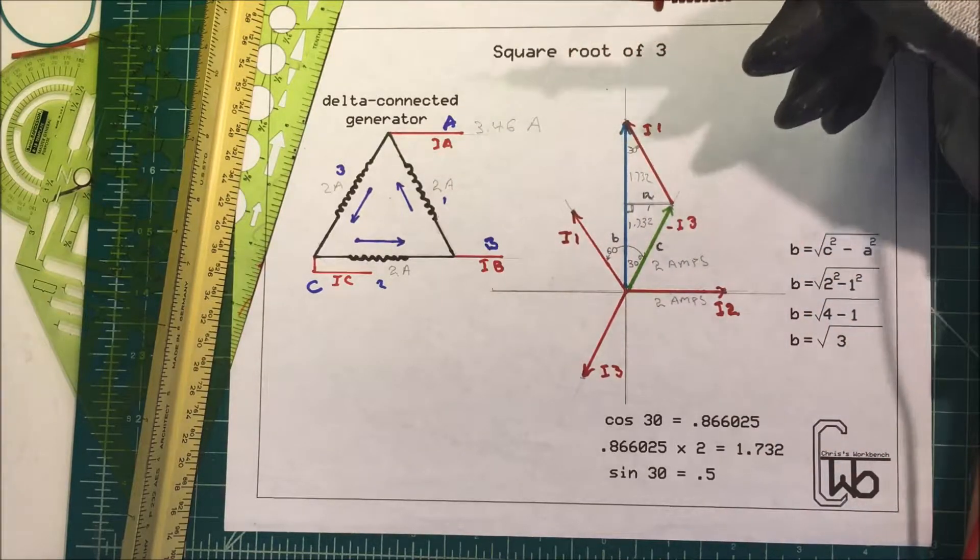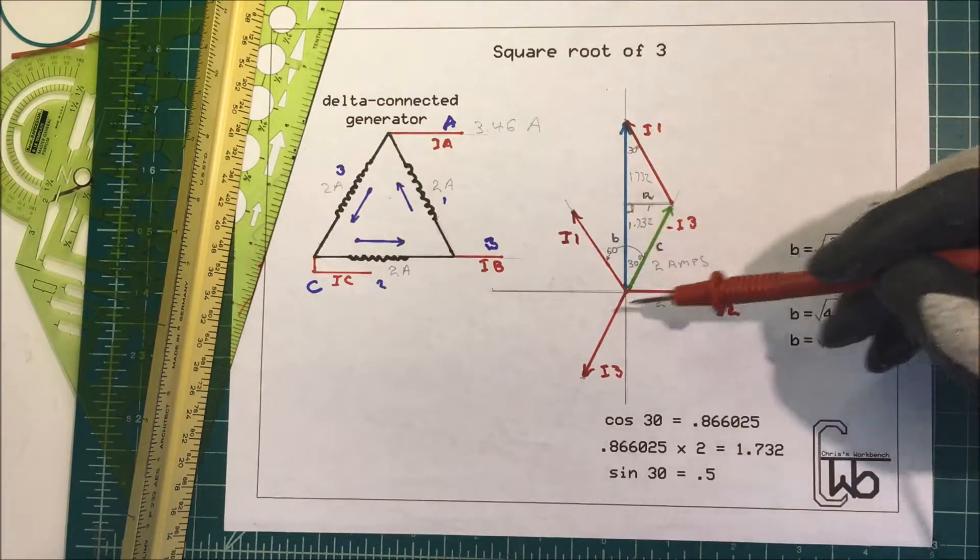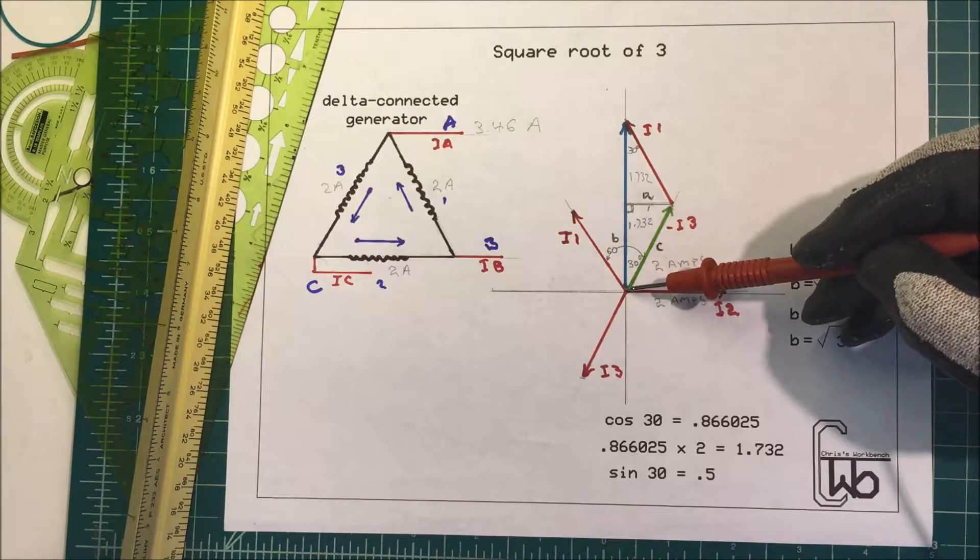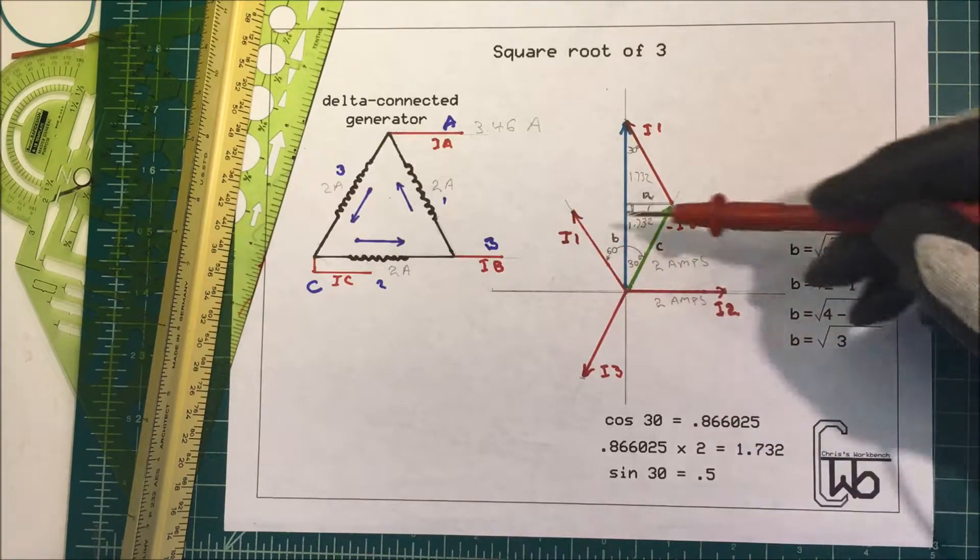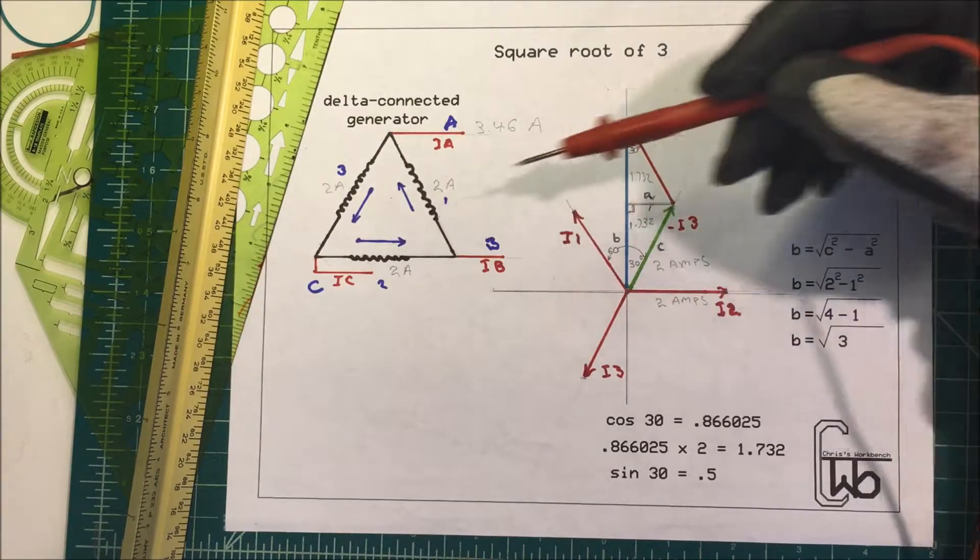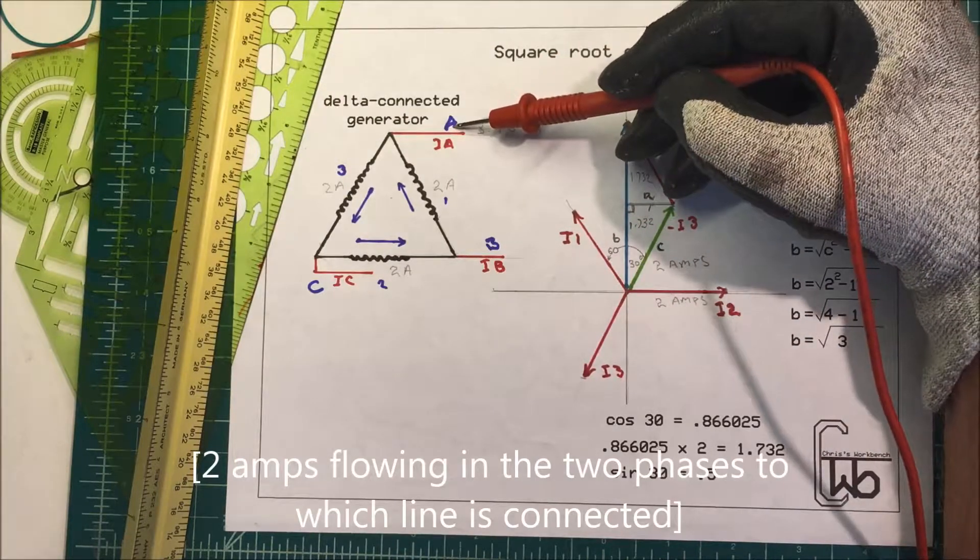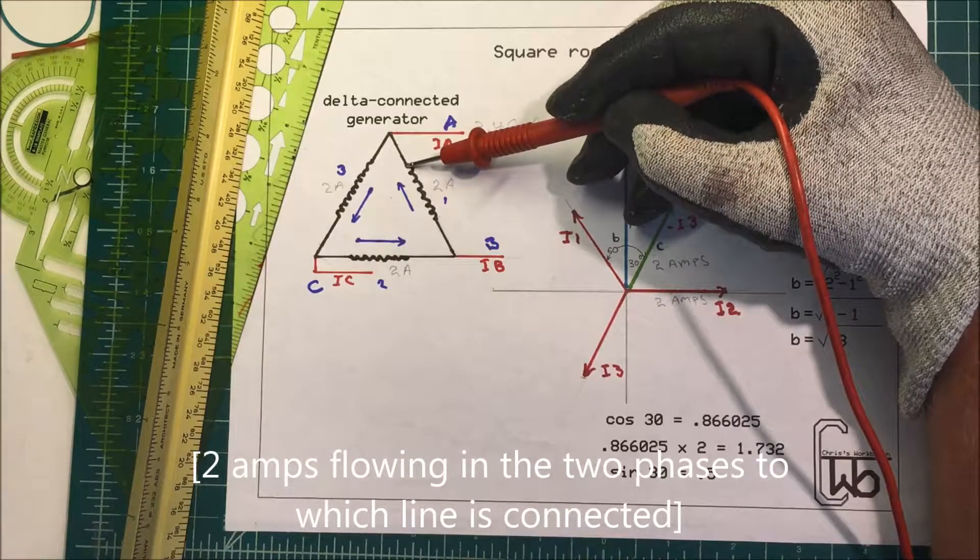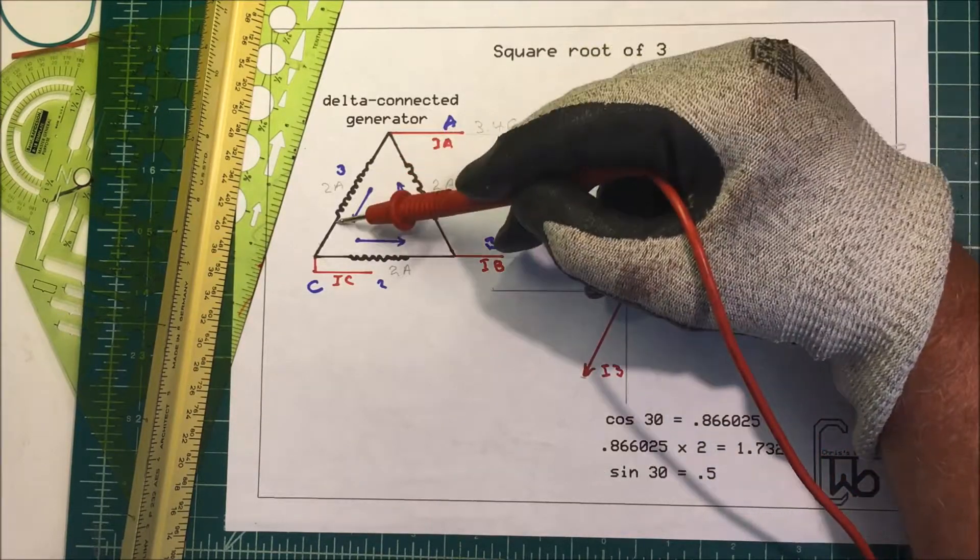We can represent the current in these coils as phasors, these red lines here. A phasor is just a vector where the tails are tied at a point and they rotate around that point. Now we want to determine the current in A. We know that the current in coil one is flowing in this direction and three is flowing in this direction.